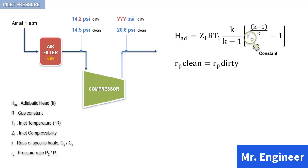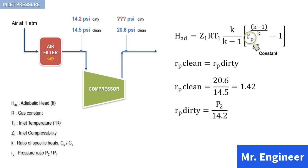The pressure ratio for the clean condition is equal to 20.6, the discharge pressure, divided by 14.5 when the air filter is clean. This gives 1.42 as a pressure ratio. The pressure ratio for the dirty condition is equal to P2, the unknown discharge pressure, divided by 14.2, which corresponds to the inlet pressure when the air filter is dirty. So P2 is equal to 1.42 times 14.2, which gives 20.2 as the new discharge pressure for the dirty filter.